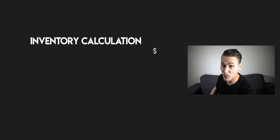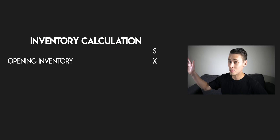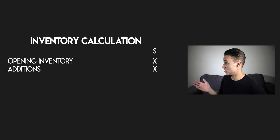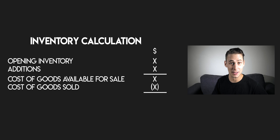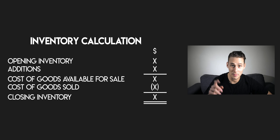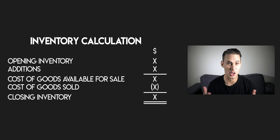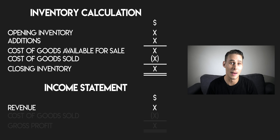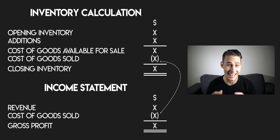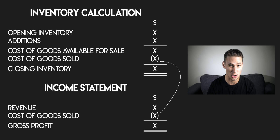It all comes down to the inventory calculation. Your opening inventory plus your additions gives you your cost of goods available for sale, and when you take away your cost of goods sold from it, you get your closing inventory. When I say inventory, I mean the goods held by your business that you intend to sell to earn revenue. When you make a sale, you don't only earn revenue — you also incur a cost, and inventory cost flow assumptions help you estimate what that cost should be.